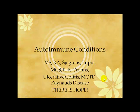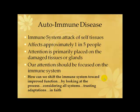We're going to go over autoimmune conditions: multiple sclerosis, rheumatoid arthritis, Sjogren's syndrome, lupus, multiple chemical sensitivity, idiopathic thrombocytopenia where your platelets are getting destroyed, Crohn's disease, ulcerative colitis, multiple or mixed connective tissue disorder, Raynaud's disease. Basically any autoimmune condition — there is hope, and I'm going to show you how we look at these things in a very different light than what you're traditionally used to.